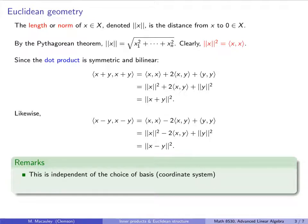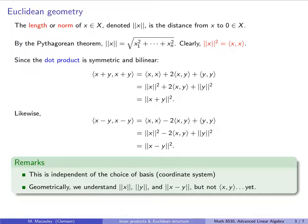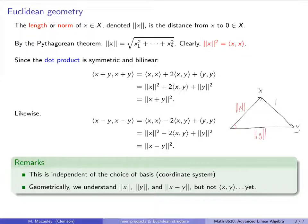Several remarks. First, all of this is independent of the choice of basis — it's independent of the coordinate system. Geometrically, we understand what ||x||, ||y||, and ||x−y|| represent: they form the three sides of a triangle, with x−y being the vector connecting the tips of x and y. We don't yet understand what x·y is, but it's going to have something to do with the angle between x and y.